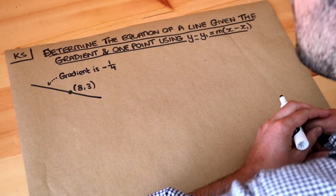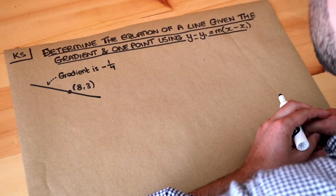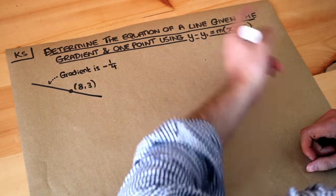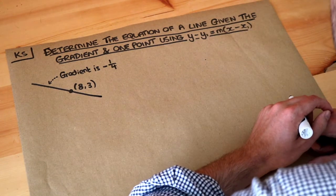Hello and welcome to this Dr. Ross-Math's key skill video on determining the equation of a line given the gradient and one point using the formula y minus y1 equals m brackets x minus x1.